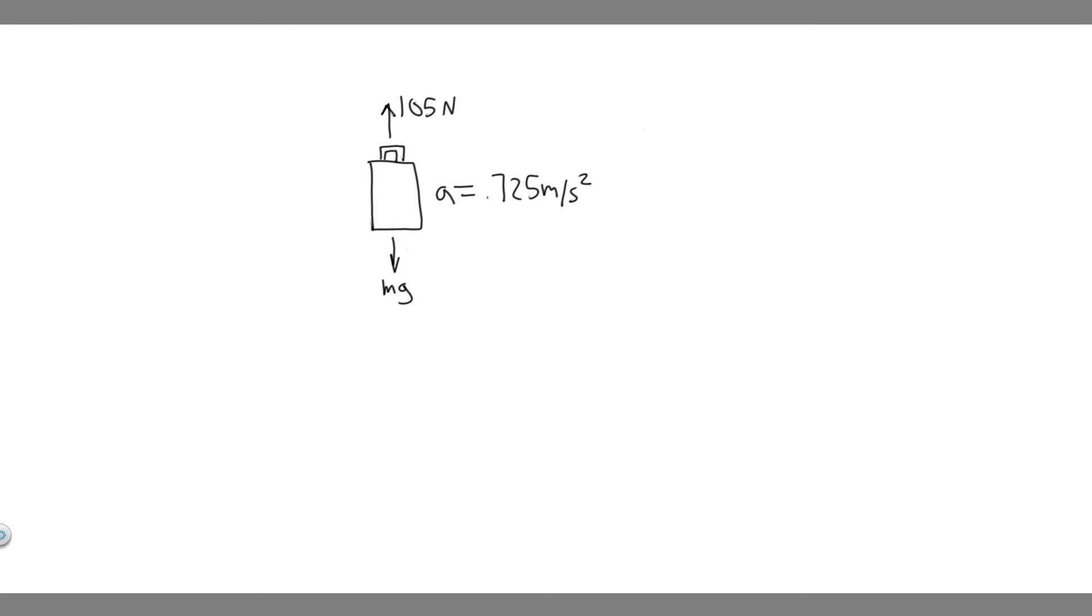And so now that we've labeled the free-body diagram, what we want to do is just go ahead and start with A. So for A, we're trying to find the mass, and the way we're going to do this is by using Newton's second law, which basically tells us the sum of the forces is equal to mass of a system times the acceleration of the system.